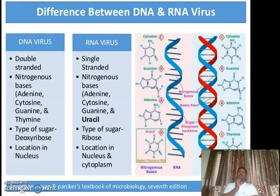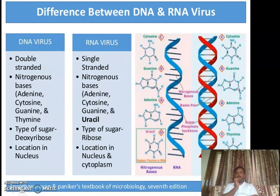Both DNA and RNA viruses have the ability to induce cancer and are called oncogenic viruses. The major differences: DNA viruses have double-stranded DNA, while RNA viruses have single-stranded RNA. DNA viruses have nitrogen base pairs adenine, cytosine, guanine, and thymine; RNA viruses have adenine, cytosine, guanine, and uracil. The sugar moiety in DNA viruses is deoxyribose and in RNA viruses is ribose. The DNA of DNA viruses is located in the nucleus, while RNA viruses are present in the nucleus as well as the cytoplasm.